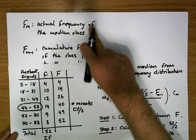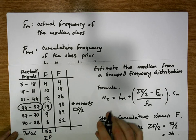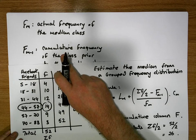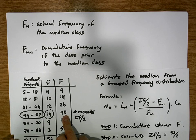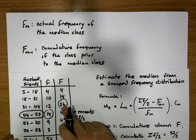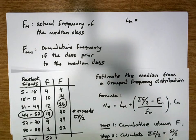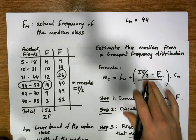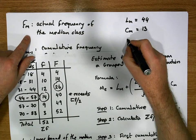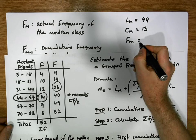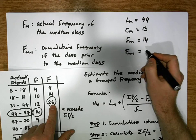Small f of M is the actual frequency of the median class. Here's the median class — its small f is 14. Capital F of M minus one is the cumulative frequency of the class prior to the median class. 40 is the cumulative frequency of the median class, so 26 is the cumulative frequency of the class before the median class. So: L of M is 44, C of M is 13, small f of M is 14, and capital F of M minus one is 26.